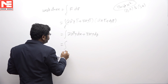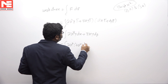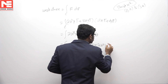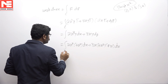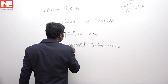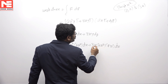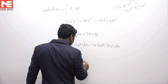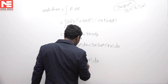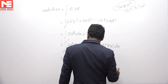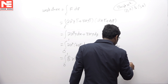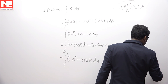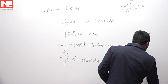Substituting y = 4x² and dy = 8x dx, the integral becomes: integral from 0 to 1 of 2x²(4x²) dx + 3x(4x²)(8x dx), which gives 8x⁴ + 96x⁴ = 104x⁴. Integrating: 104 · (x⁵/5) from 0 to 1 = 104/5 = 20.8.